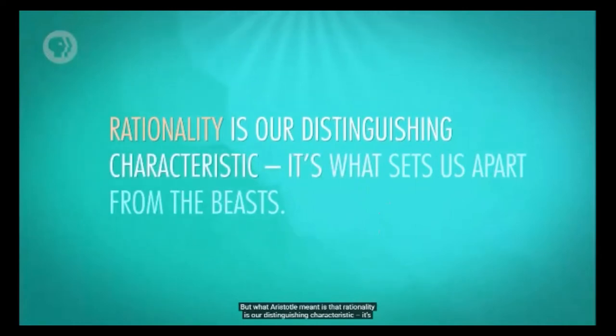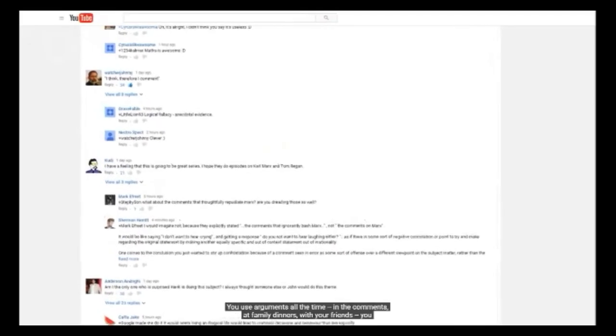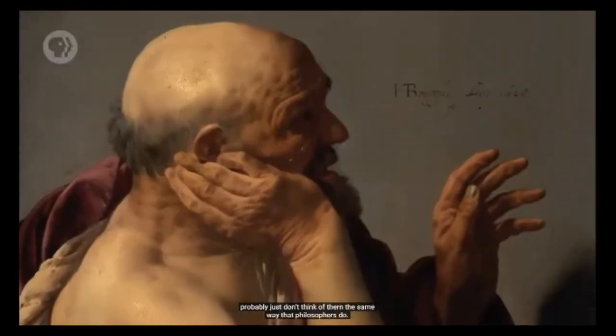Aristotle described humans as the rational animal, meaning rationality is our distinguishing characteristic — what sets us apart from beasts. No matter how much you disagree with someone, people can most of the time be persuaded by arguments. You use arguments all the time — at family dinners, with friends. Each time you tell someone to do or believe something, you are giving an argument. The problem is most people aren't good at it; we confuse good arguments with witty comebacks or making points more loudly and angrily, instead of building a case on a solid foundation of logic.